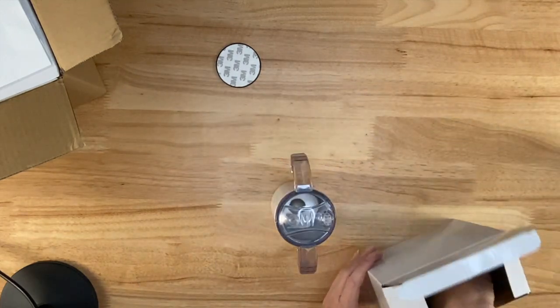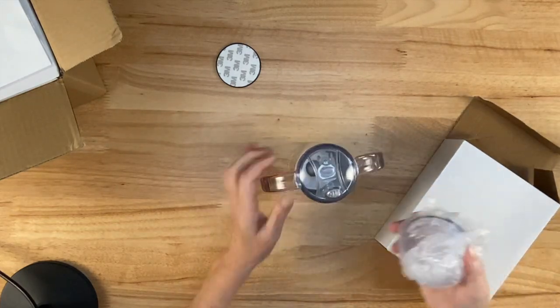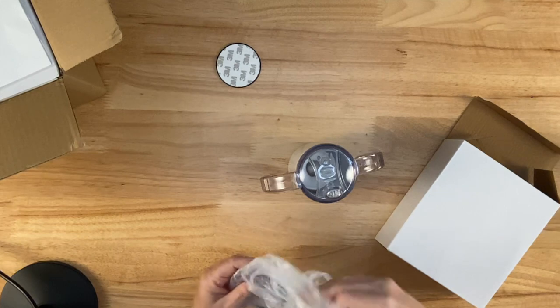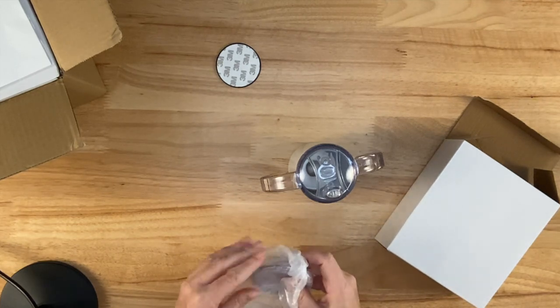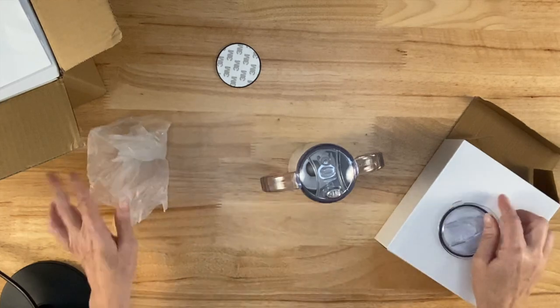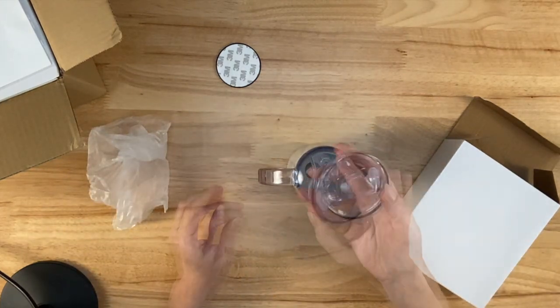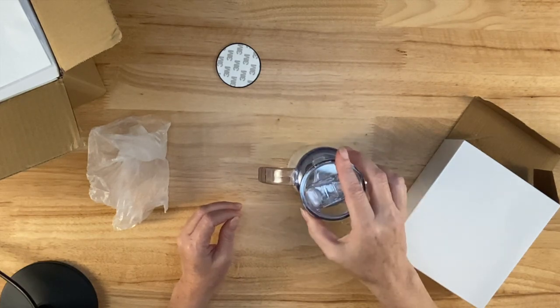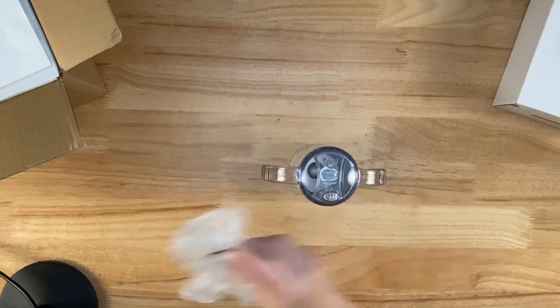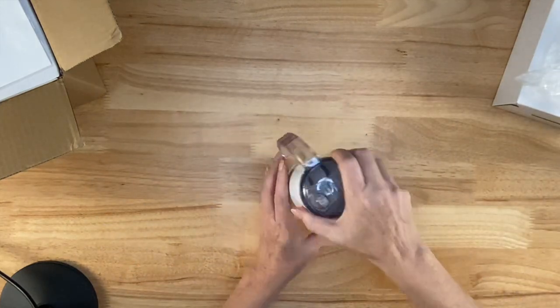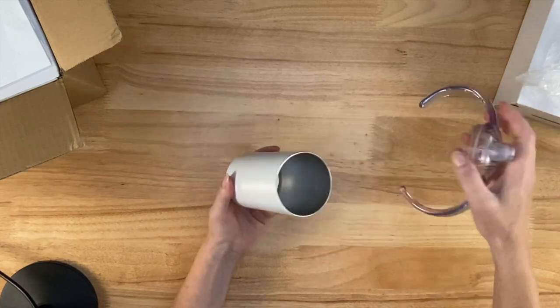And then in addition to getting this sippy cup type handle, they also sent this more traditional lid. So when your child no longer needs this, you can trade it out for a regular top. And I thought that was a great idea. Alright, so let's go ahead and measure this so I can get my sublimation image printed.